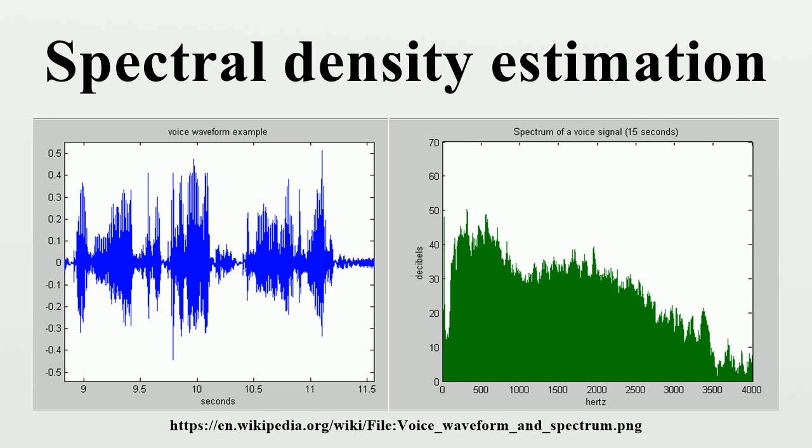Short-time Fourier transform. Below is a partial list of parametric techniques: Autoregressive model estimation which assumes that the Nth sample is correlated with the previous P samples.